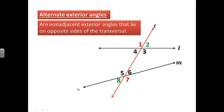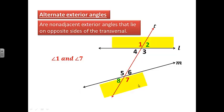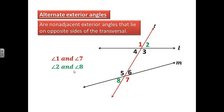Alternate exterior angles — can you guess just from the name? They are non-adjacent exterior angles that lie on opposite sides of the transversal. So angle 1 and angle 7 are alternate exterior angles — they are on the exterior, on the outsides of line L and line M, and on opposite sides of the transversal. Angle 2 and angle 8 are also examples of alternate exterior angles.